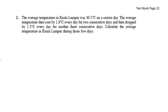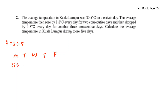The average temperature in Kuala Lumpur was 30.5°C on a certain day. The temperature rose by 1.8°C every day for two consecutive days: Monday is 30.5, Tuesday is 30.5 plus 1.8 equals 32.3, and Wednesday is 32.3 plus 1.8 equals 34.1.